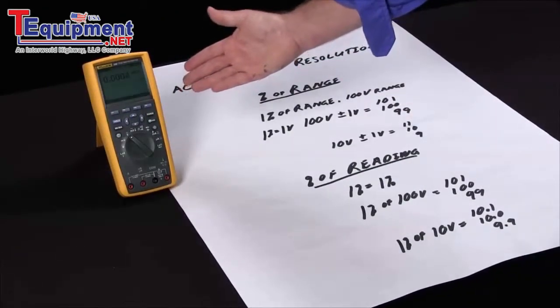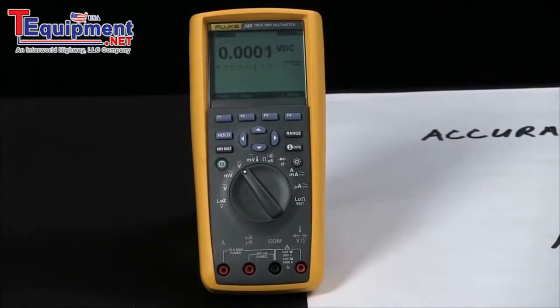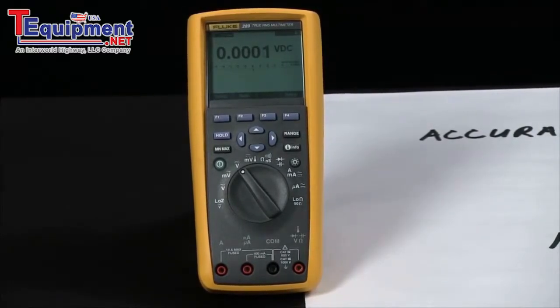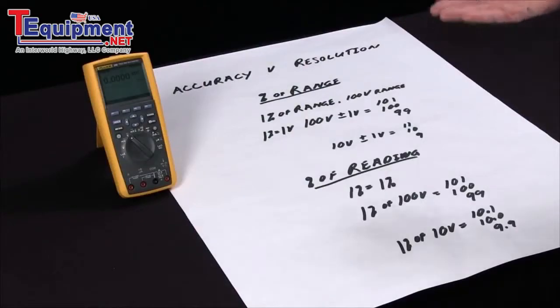And here we have our Fluke 289, which is actually one of the most accurate and highest resolution handheld multimeters you can get. It can actually outperform a lot of bench multimeters.